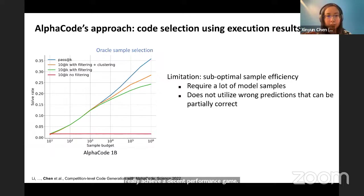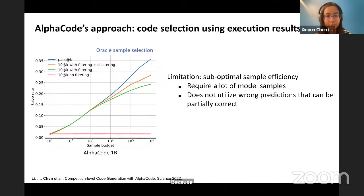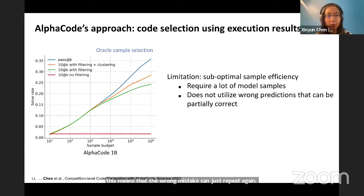Code selection and re-ranking approaches do not really utilize those wrong predictions that can be partially correct. Even for challenging problems, at least part of the generated program is usually reusable. But if we perform code selection, each sample is generated independently, meaning the same wrong mistake can just repeat again and again — whereas for humans, once we execute the code, we know some programs should be fixed and the same mistake shouldn't happen again.